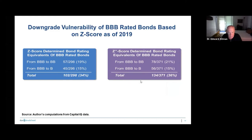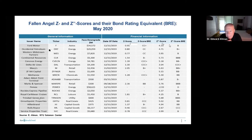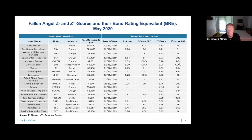Look what's happening. Some of these names will be familiar to you: Ford Motor Company, Occidental Petroleum, Delta Airlines, Macy's Department Store, Marks & Spencer, and others — all companies downgraded from triple-B to double-B since COVID-19. If you look at the Z-scores and Z-double prime scores, every one of them that was downgraded had a Z-score below triple-B bond rating equivalent in the BRE column, and most had a Z-double prime score below triple-B bond rating equivalent. In other words, these companies were vulnerable before COVID-19, and you could have known that with a Z-score type model.